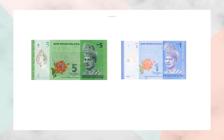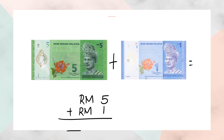For this one: 5 ringgit plus 1 ringgit — you have to write RM, you must write RM — so five plus one is six, you will get RM6.